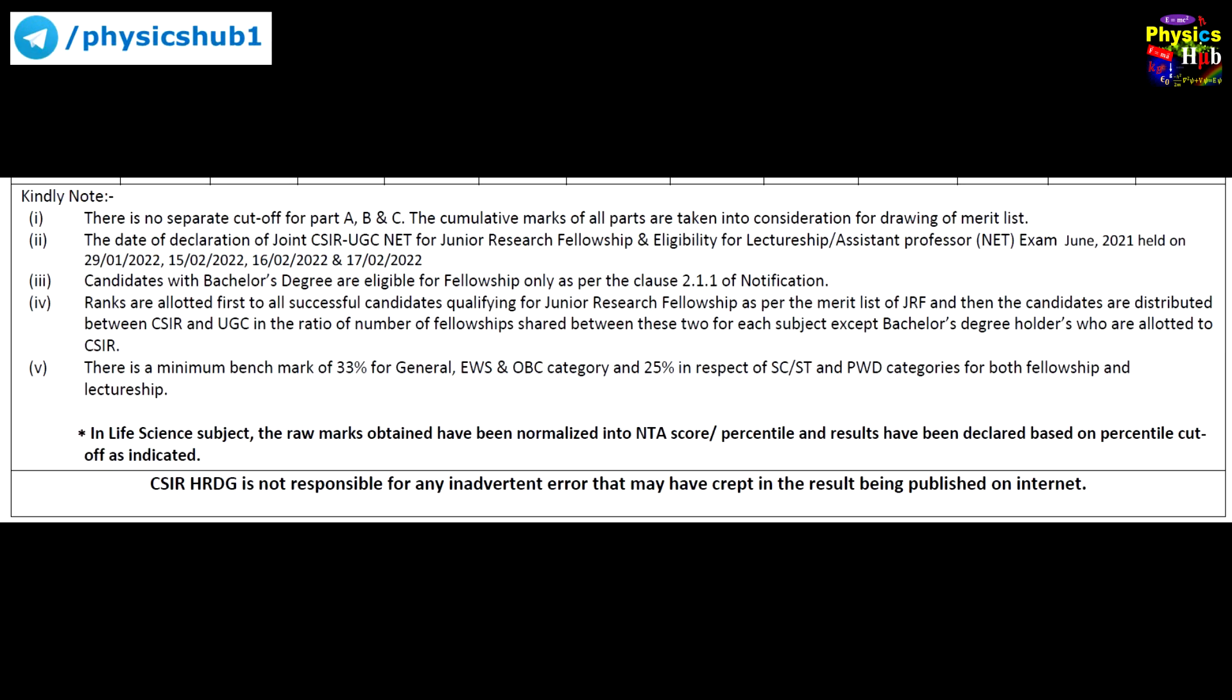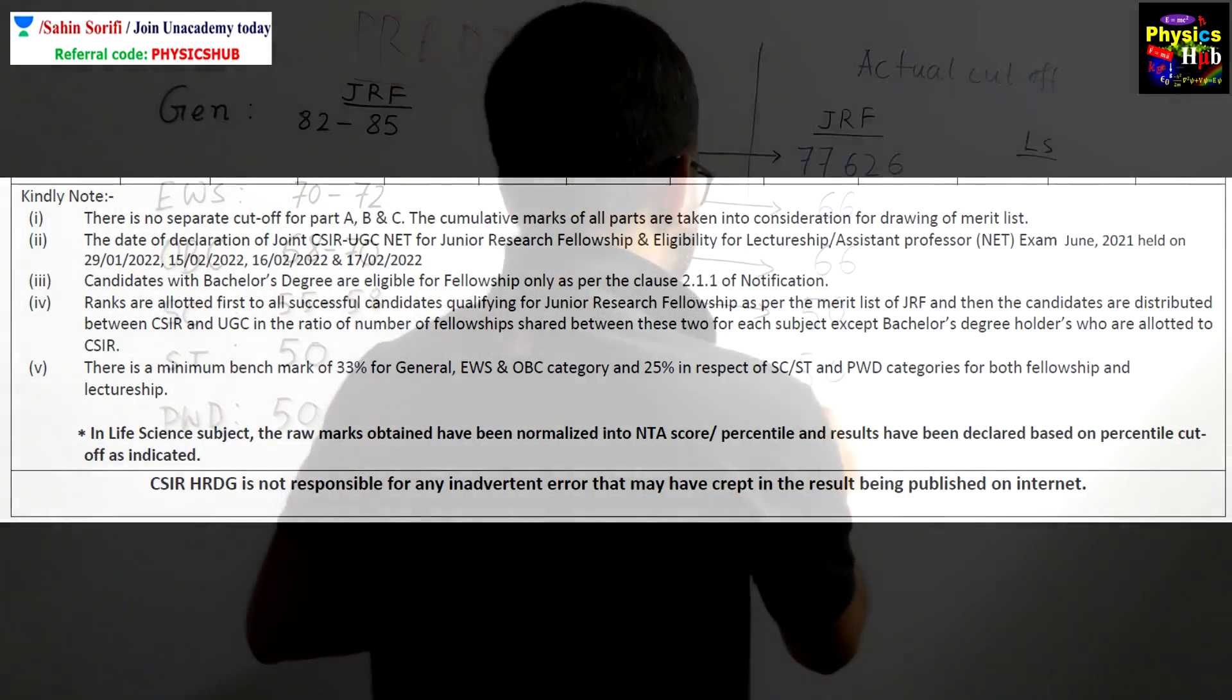As you can see, it is mentioned that there is a minimum benchmark of 33 percent for general means 66 marks must be there for general, and EWS and OBC category for three of them, 25 percent for SC, ST and PWD categories. So that is why for PWD it is 50.